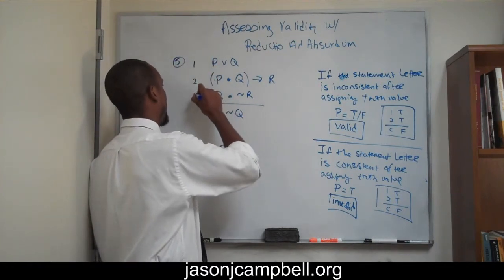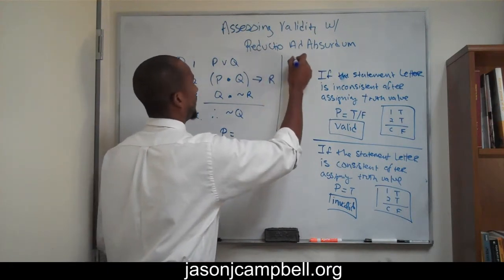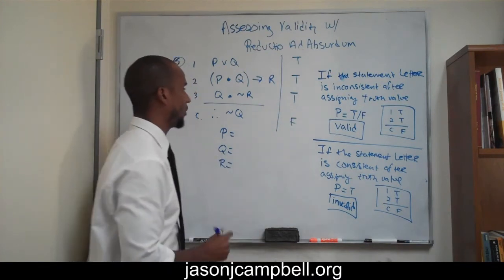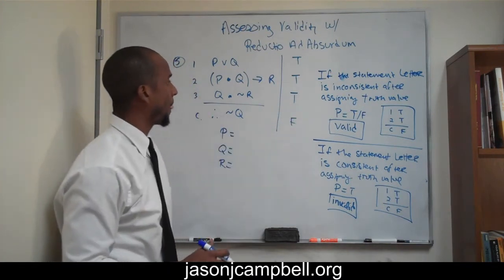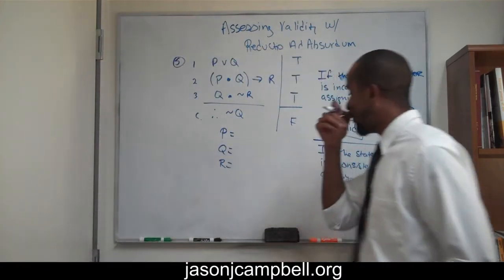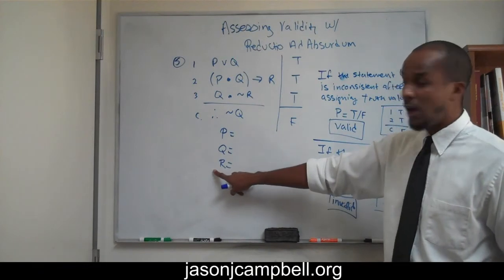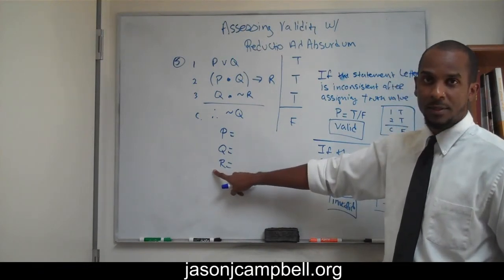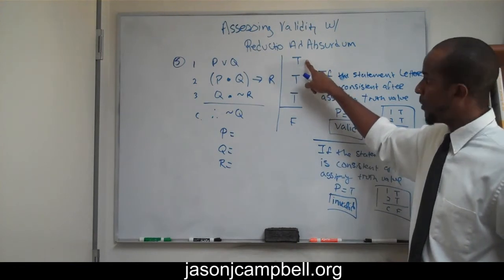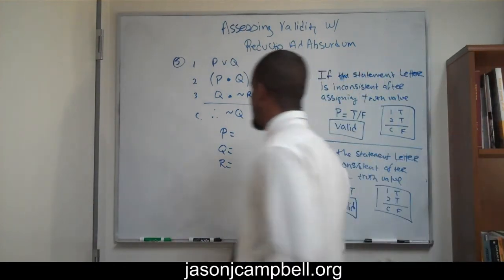Next, identify my premises and my conclusion. We want the premises to be true and the conclusion to be false. We'll definitely start with the conclusion, because that's simple. Step two: make the distinction between our premises — we have three premises — and our conclusion, one conclusion. And now we begin.